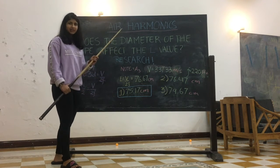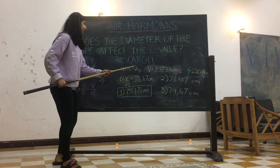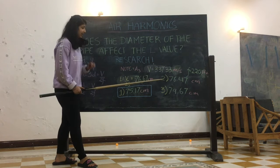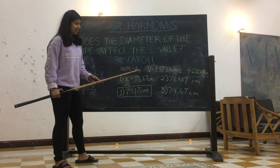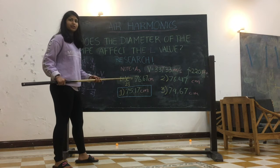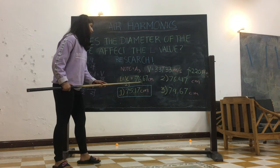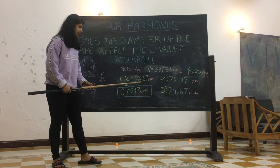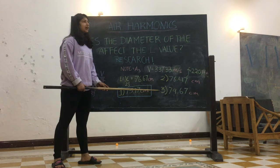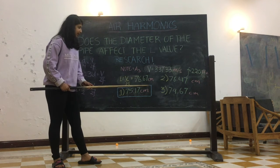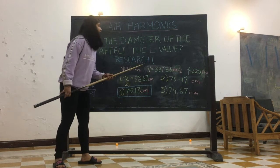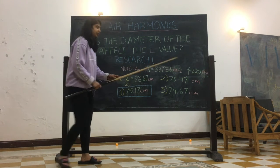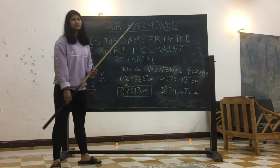We conducted a mini-inquiry lab within the inquiry lab. We took one note — A3 — and figured out how three different diameter formulas would affect our pipe length. We also took a control group, which was simply v divided by 2f with no diameter correction. These gave us four values. We cut pipes to all four lengths, hit each pipe with a frequency detector, and whichever one gave us A3 at 220 Hz, we took that as our formula going forward.